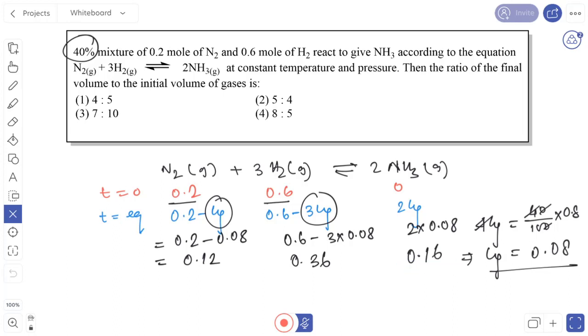The final moles will be 0.12 plus 0.36 plus 0.16 equals 0.64. So 0.64 is the total number of moles at equilibrium. And initially, that is 0.2 plus 0.6 equals 0.8 mol.